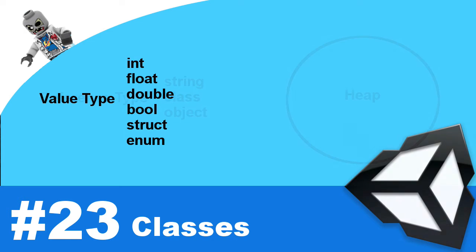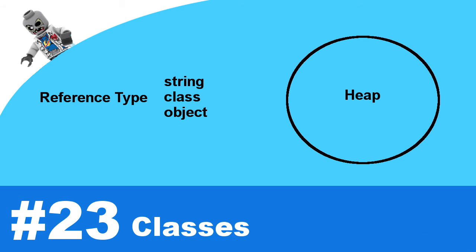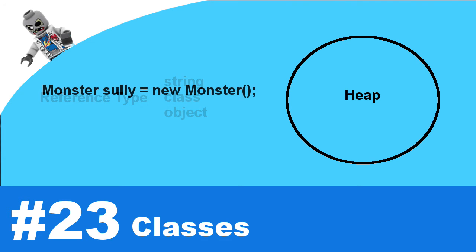Now let's get into reference types — these are objects that live in the heap. The heap is basically a central location where we put all our objects, and we have references to these objects. A reference is simply a variable: you put a type name and a variable name, and like creating a struct you use the 'new' keyword followed by the type name. That essentially creates an object in the heap and makes a reference from that variable to that object.